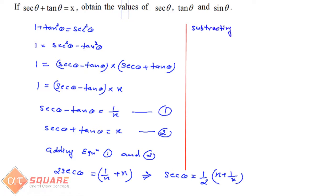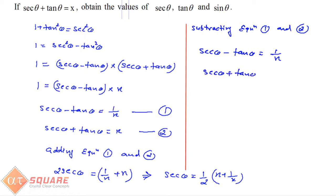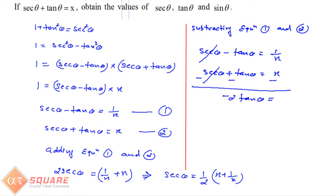Subtracting equation 1 and 2 — let's write both equations: sec θ - tan θ = 1/x (equation 1), and sec θ + tan θ = x (equation 2). In subtraction, the sign of every term in equation 2 changes. So sec θ - sec θ cancels, and -tan θ - tan θ = -2 tan θ, which equals 1/x - x.